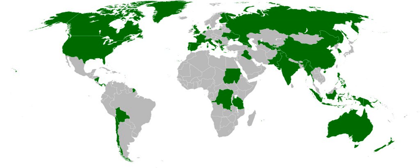In Ethiopia, Special Woredas are a subgroup of woredas districts that are organized around the traditional homelands of an ethnic minority, and are outside the usual hierarchy of Kilil, or region. These woredas have many similarities to autonomous areas in other countries.